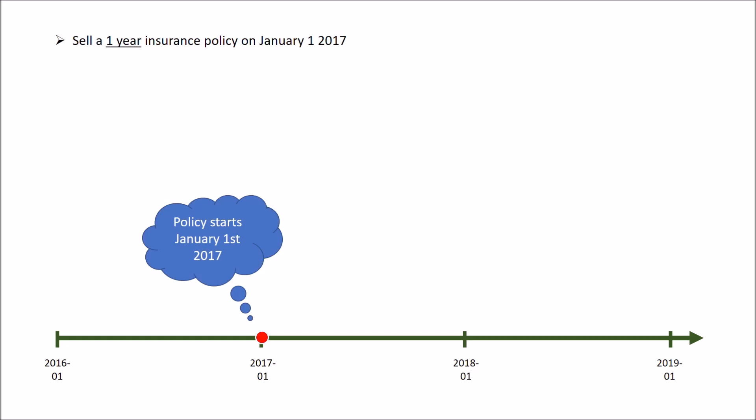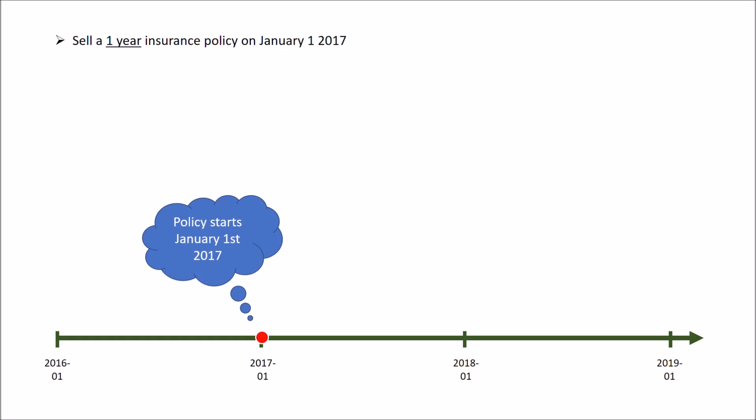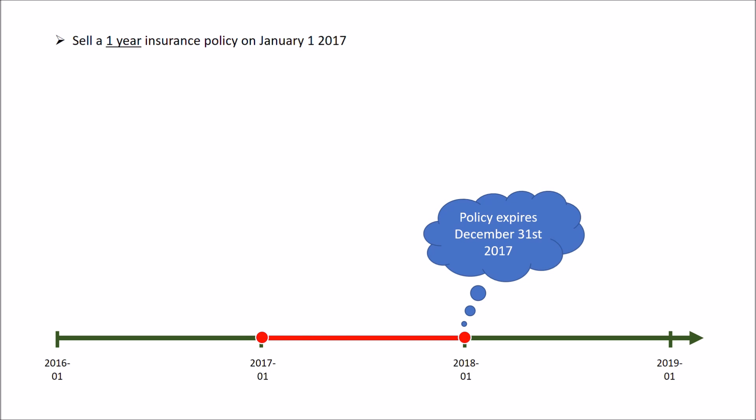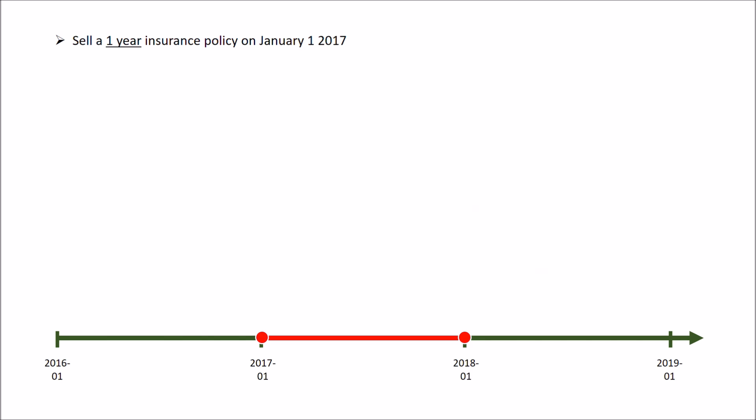Let's say that you sell a one-year insurance policy on January 1st, 2017. That means the insurance policy is going to be in force until December 31st, 2017. Then on January 1st, 2018, the policy would either get renewed or expire. For what I'm doing today, we're not thinking about renewals — we're just thinking about the one-year time period.